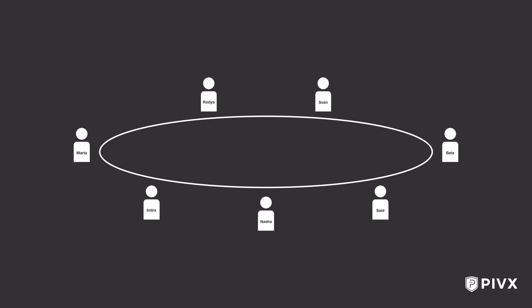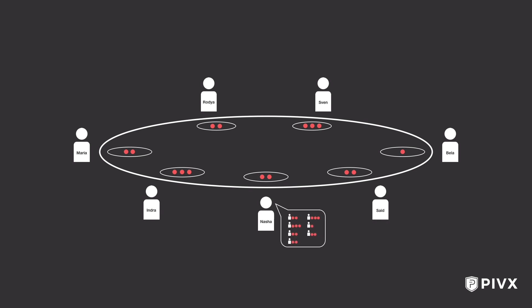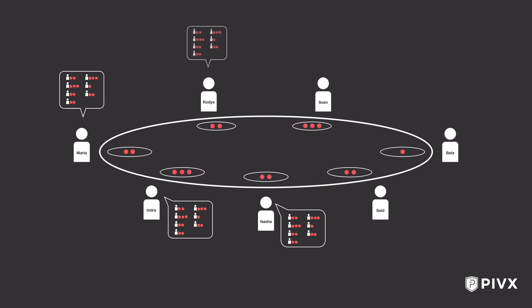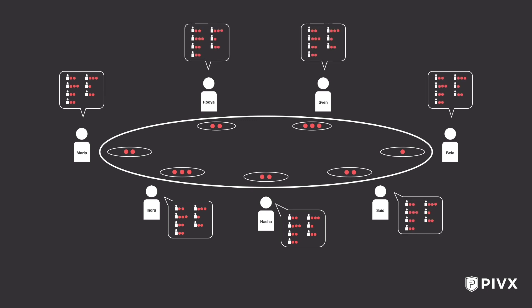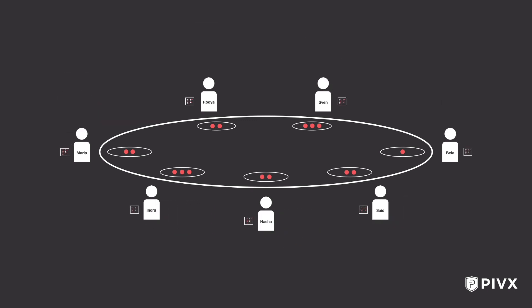Let's step this analogy up a notch. Imagine this time that each player has a corresponding pocket in the tarp where they store red rubber balls. The players use the exact same protocol as before to keep track of changes to the tarp in exchange for rewards. A player is chosen at random to go first — this time it's Nasha. Nasha says: hey, I have two red balls, Indra has three, Maria has two, Raja has two, Sven has three, Bella has one, and Saeed has two. When the other players indicate they agree, a picture is taken, everyone gets a copy, and Nasha receives a red ball as a reward, which gets added to her pocket on the tarp.